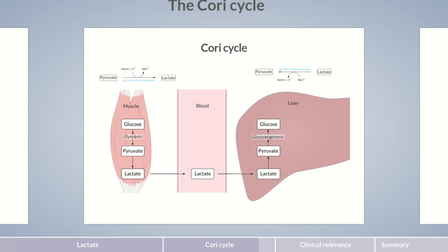The glucose produced in the liver can be stored as glycogen and released back into the bloodstream when needed. This way, it's transported to various tissues that use glucose, including skeletal muscle cells. With this, the metabolic cycle of lactate and glucose production is complete. This interplay between the liver and skeletal muscles is also termed the Cori cycle.